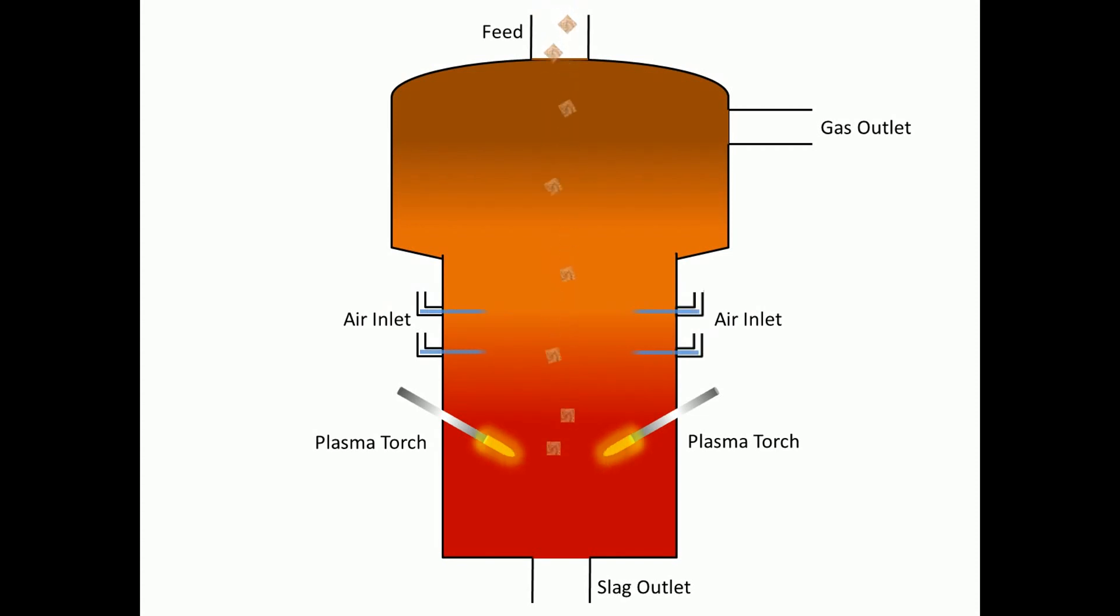The last one introduced here is plasma gasifier. In this gasifier, electricity is passed between two metal electrodes creating an electrical arc. Pressurized inert gas is ionized when passing through the arc creating plasma, and temperature is raised. The reactor operates at a slightly negative pressure.